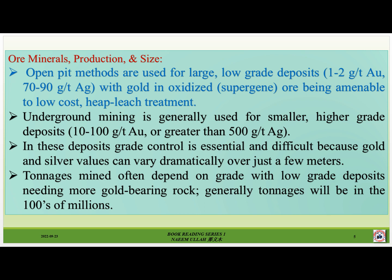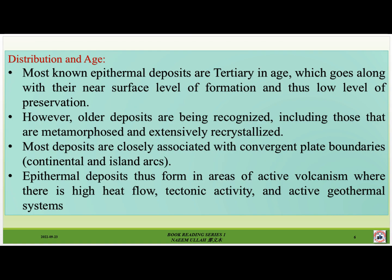Open pit methods are used for large, low-grade deposits — 1 to 2 grams per ton gold, 7 to 90 grams per ton silver — with gold in oxidized supergene ore being amenable to low-cost heap leach treatment. Underground mining is generally used for smaller, higher-grade deposits of 10 to 100 grams per ton gold or greater than 500 grams per ton silver. In these deposits, grade control is essential and difficult because gold and silver values can vary dramatically over just a few meters. Low-grade deposits generally need more gold-bearing rock, and tonnages will be in the hundreds of millions.